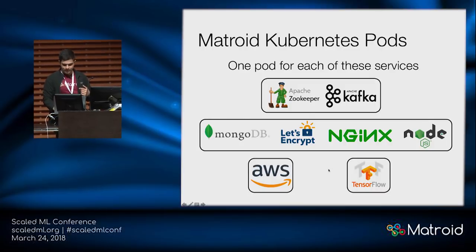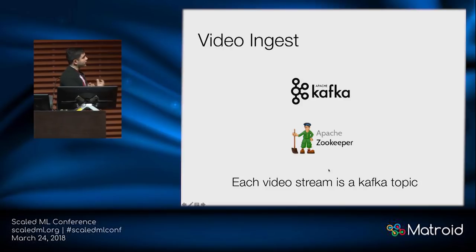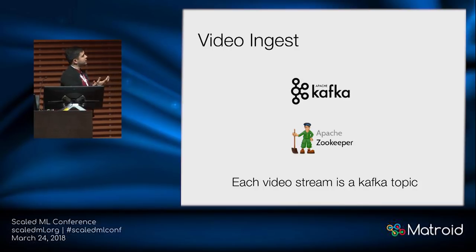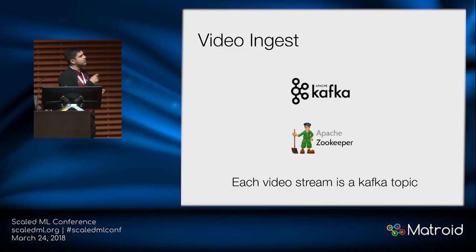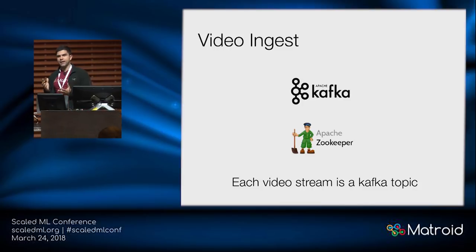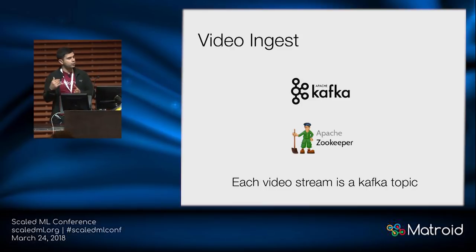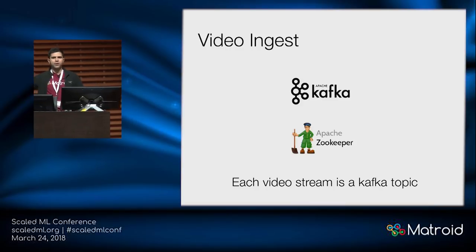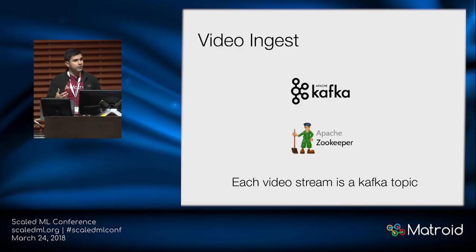Our video ingest is handled by Kafka. Kafka is a distributed system that allows you to have topics — you publish to topics and consume from topics. A topic is a stream of messages. In our case, every stream is a single topic. Because a topic is kept fault tolerant, if a machine responsible for consuming a topic goes down, ZooKeeper brings it back up. ZooKeeper is a separate pod that watches Kafka. The two work together to ensure a steady stream of videos coming in.